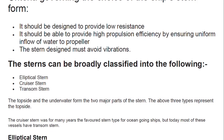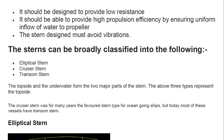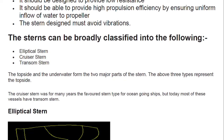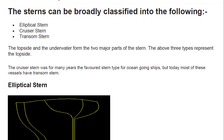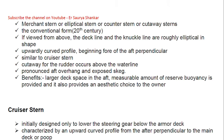The cruiser stern was earlier the most favored one, but today most vessels have a transom stern. We will begin with elliptical stern, which is mostly obsolete — you will find it in smaller yachts and ferries. Merchant ships use the elliptical stern, also called counter stern or cutaway stern.